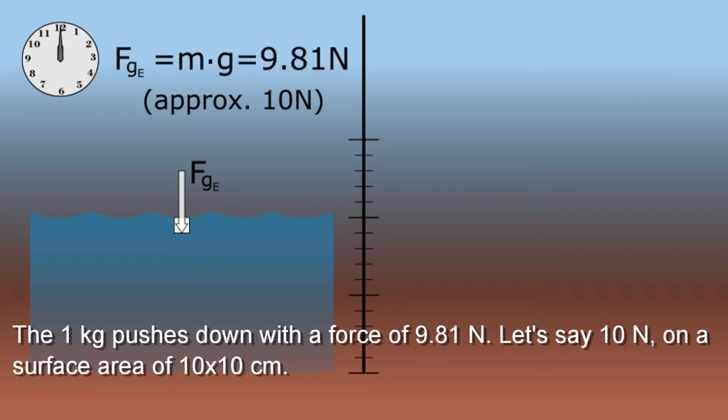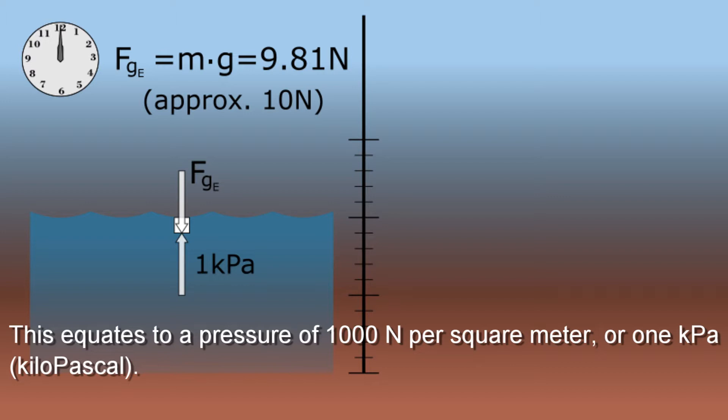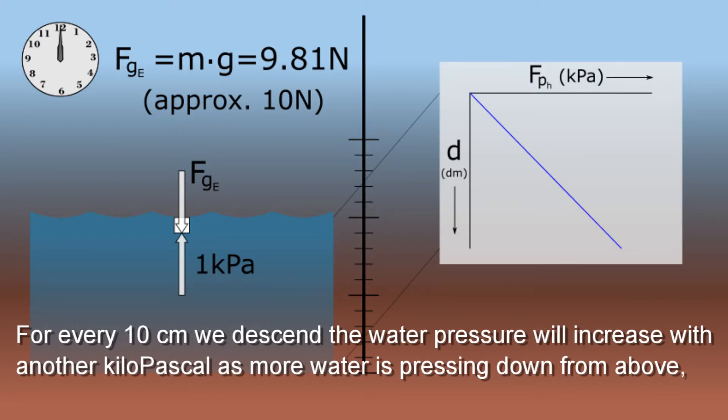The one kilogram pushes down with 9.81 newtons, let's say 10 newtons, over a surface area of 10 by 10 centimeters. This equates to 1000 newtons per square meter, or one kilopascal. For every 10 centimeters you descend, the water pressure will increase with another kilopascal as more water is pressing down from above.